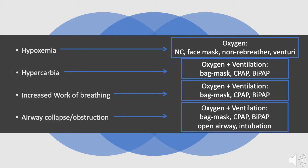If the patient is obtunded, is hypoventilating, or is apneic, they will also likely have hypercarbia and may need manual or mechanical assistance with breathing.